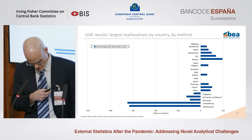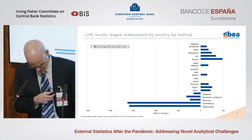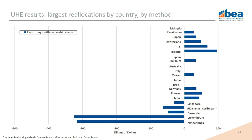This chart features the largest reallocations in the equity position by country for the pass-through-with-ownership-chains method. Keep in mind that this method reflects the equity position that stays in each foreign affiliate and does not go on to another affiliate further down the ownership chain. The chart features the top 10 largest positive reallocations at the country level and the five largest negative reallocations.